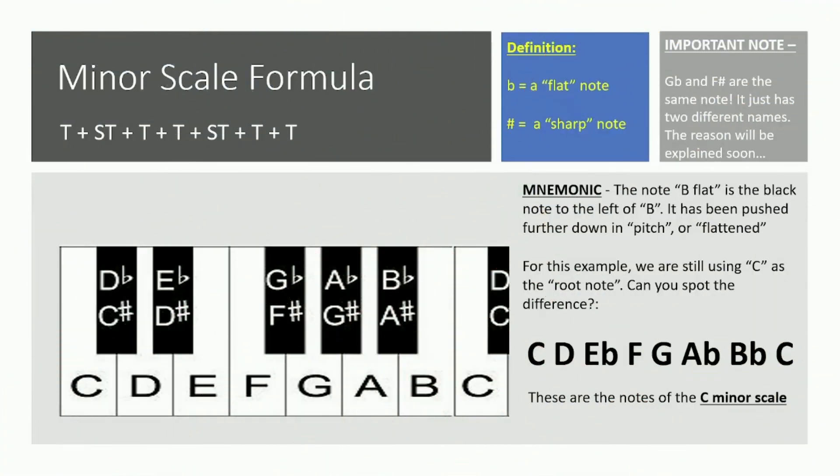Now we're going to look at the minor scale formula. As you can see we've got the formula directly underneath the title: tone, semitone, tone, tone, semitone, tone, tone. That gives us the notes for the C minor scale. In this example, same as all the rest, we start with C and we've got the notes already over to the right. Can you spot the difference between the major scale that we just did and this minor scale that we are about to see how it was constructed now?